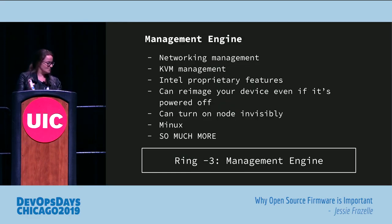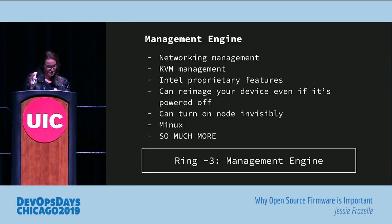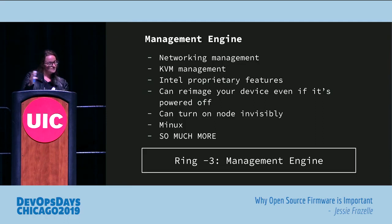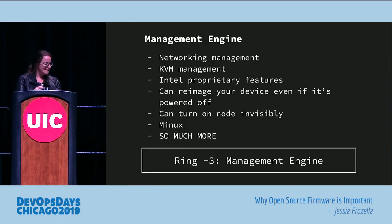Then there's the Intel management engine, which has networking management, KVM management, and Intel proprietary features. It can actually reimage your device even if it's powered off, which is incredibly terrifying. Also terrifying: there's a web server in there, so it can reimage your device and it's hooked up to the internet. It can turn on the node invisibly, and it runs Minix — which no one knew for the longest time. So the most popular Unix runtime is actually Minix, which is crazy.